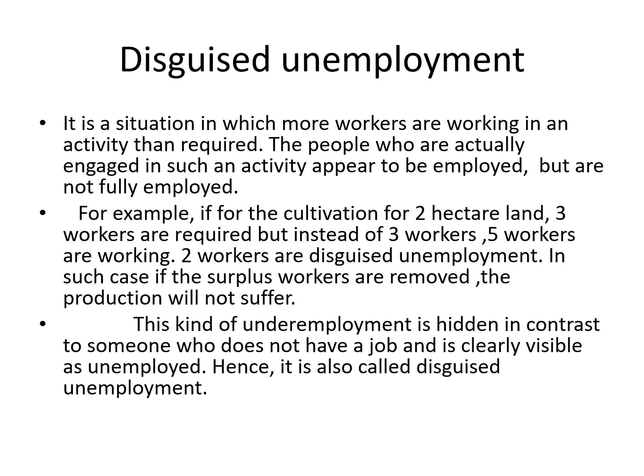The people who are actually engaged in such an activity appear to be employed, but are not fully employed. In the case of Lakshmi, there are five members — all five are engaged in agricultural work, but the requirement is only three workers. If two members are removed, agricultural work is not affected. This kind of underemployment is hidden, in contrast to someone who does not have a job and is clearly visible as unemployed.